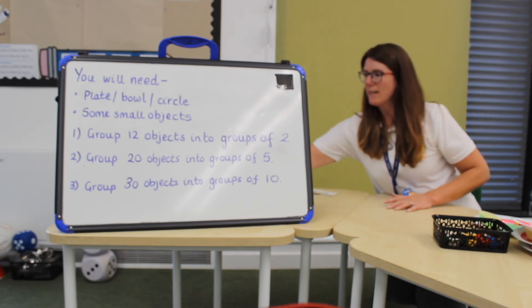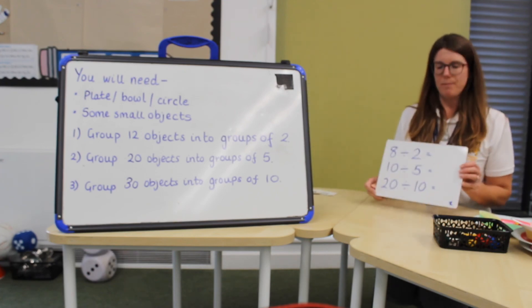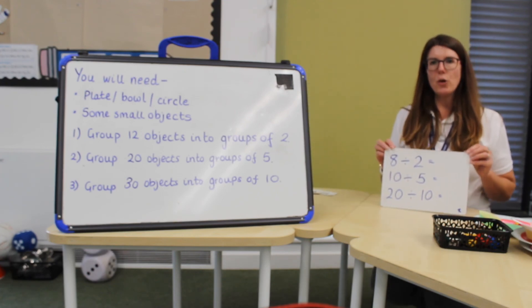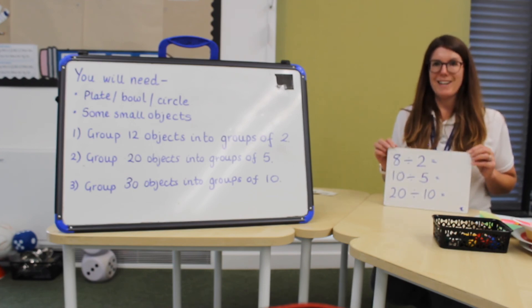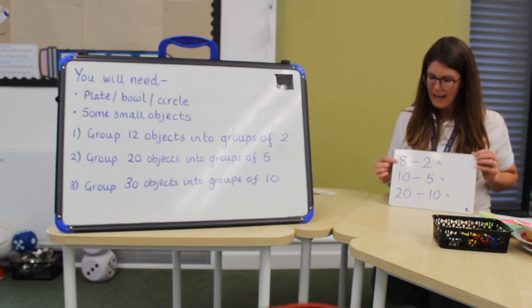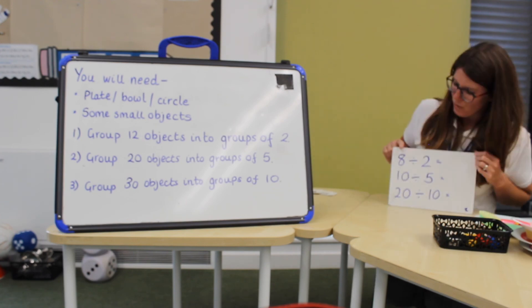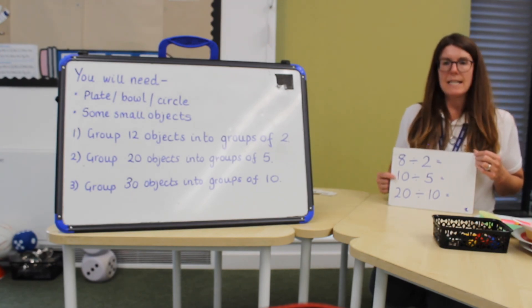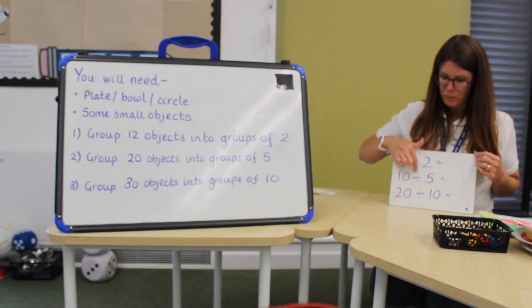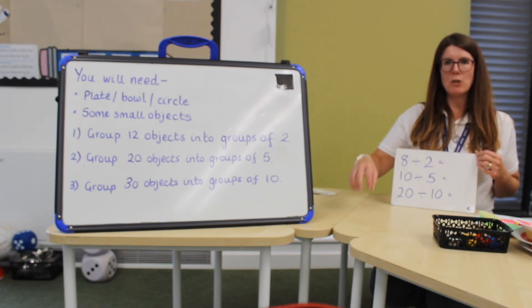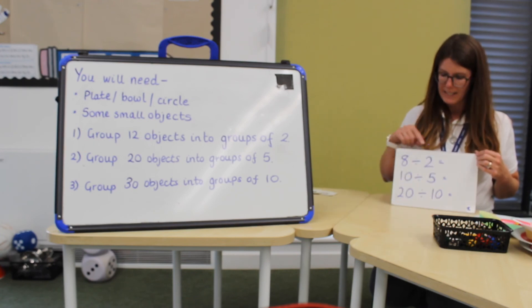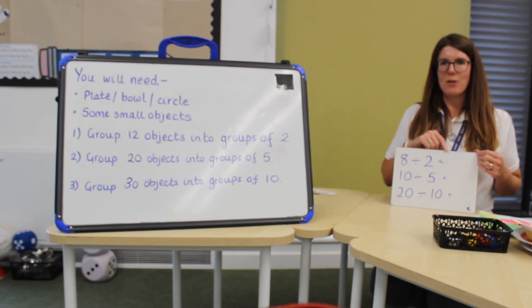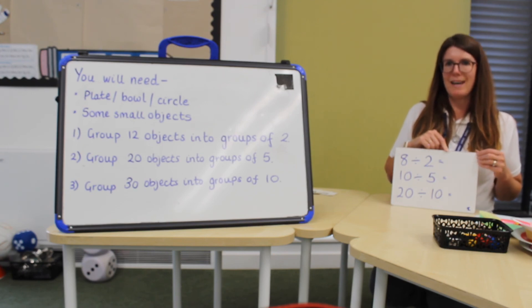Now I'm going to give you the calculation. And using your objects you're going to find the answer to these calculations. Eight divided by two. You've got eight objects and you're going to put them in groups of two. Then you're going to get ten objects and put them in groups of five or divide. And then you're going to get twenty objects and put them in groups of ten. Once you've got them in groups or you have divided them then you can find how many groups there are and that is the answer.